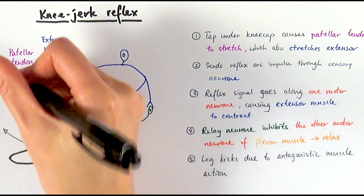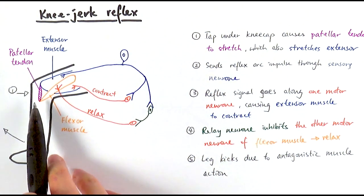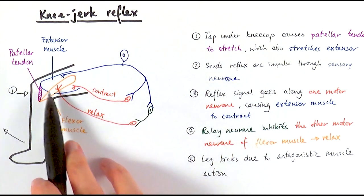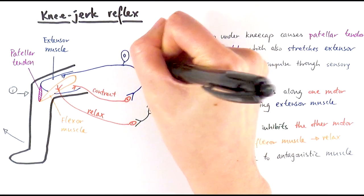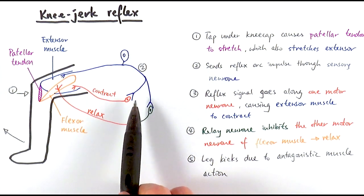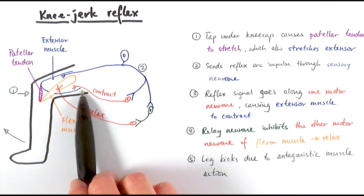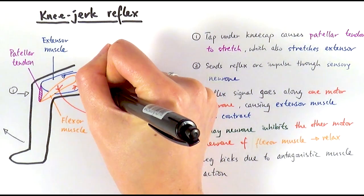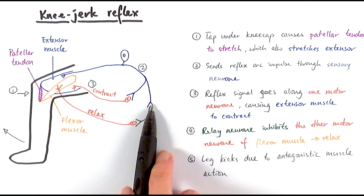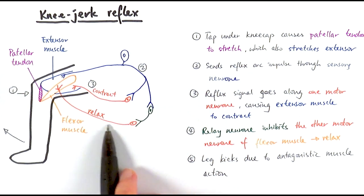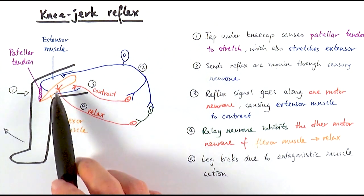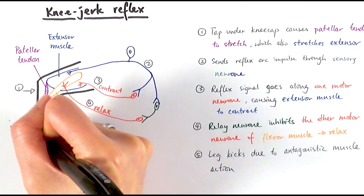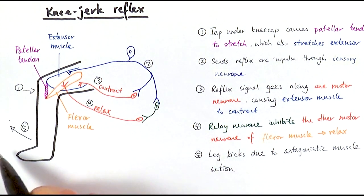To summarize: step one, a tap on the kneecap causes the patellar tendon to stretch, which also stretches the extensor muscle. This sends a reflex arc impulse through the sensory neuron, including a branch. The reflex signal goes along one motor neuron connected to the extensor muscle, causing it to contract. The other branch of the sensory neuron goes through a relay neuron, which inhibits the motor neuron connected to the flexor muscle, causing it to relax. Because of the antagonistic muscle movement, the leg kicks upwards.